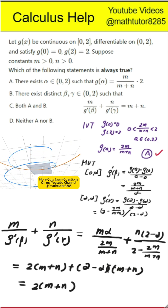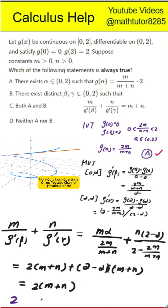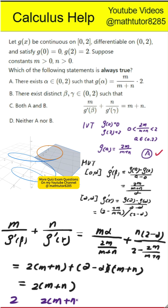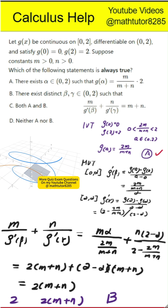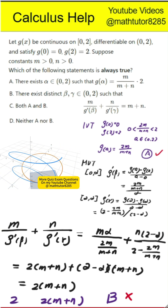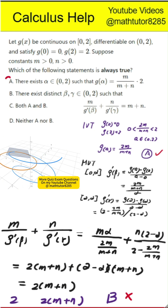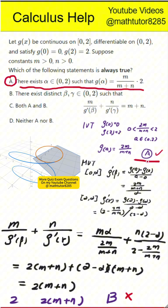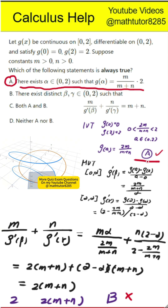Next step is to observe the scaling difference. Unlike the original problem where the interval length was 1, here the interval length is 2. This difference in length causes the result to be 2 times m plus n rather than simply m plus n. Therefore, statement B is false. Only statement A holds — the correct choice is option A. Always pay attention to the interval length when applying the mean value theorem, because the length of the interval directly scales the final result.